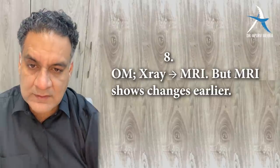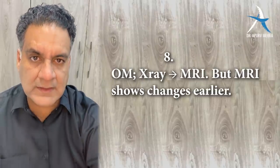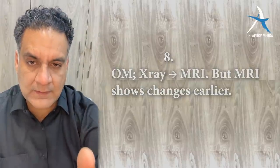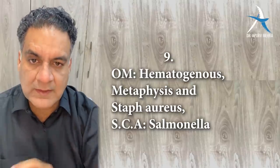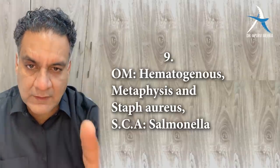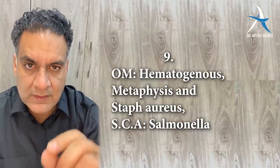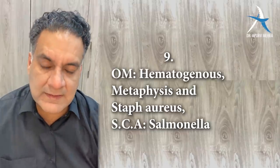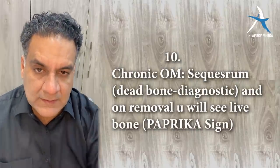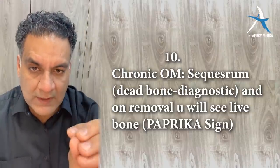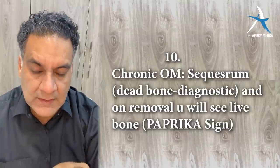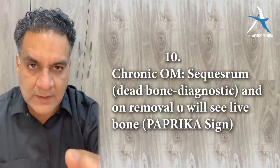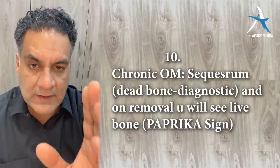Point number nine: osteomyelitis spreads hematogenously, affects the metaphysis, and Staph aureus is the most important organism — except in sickle cell anemia, where remember Salmonella. Point number ten: chronic osteomyelitis means dead bone called the sequestrum. Also remember: when you remove the sequestrum, underneath the live bleeding bone appears — this is the paprika sign, repeated in exam questions multiple times.